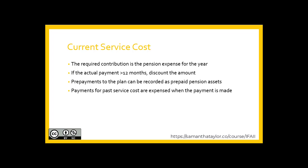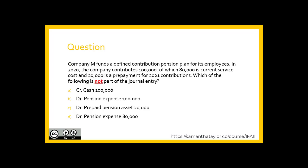Let's look at a question. Company M funds a defined contribution pension plan for its employees. In 2020, the company contributes $100,000, of which $80,000 is current service cost and $20,000 is a prepayment for 2021 contributions. Which of the following is not part of the journal entry?